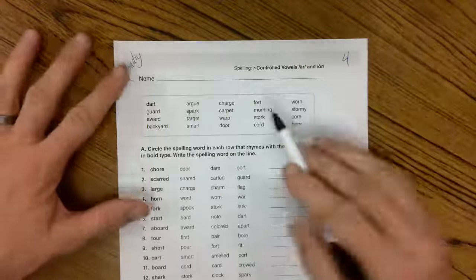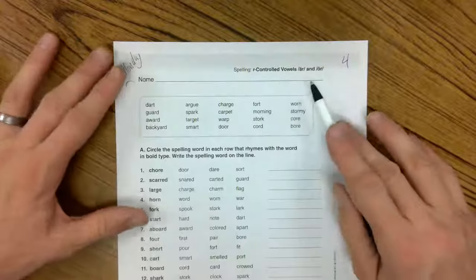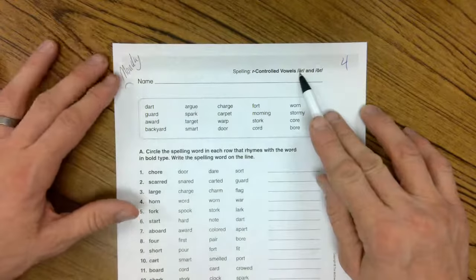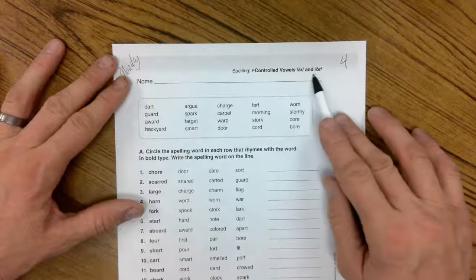Good morning class. This week we've got the R controlled vowels. It has an R after a vowel and it makes a sound together. R and or.